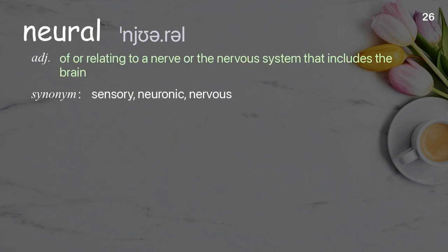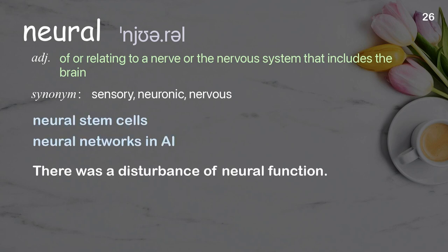Neural: of or relating to a nerve or the nervous system that includes the brain. Examples: neural stem cells; neural networks in AI. There was a disturbance of neural function.